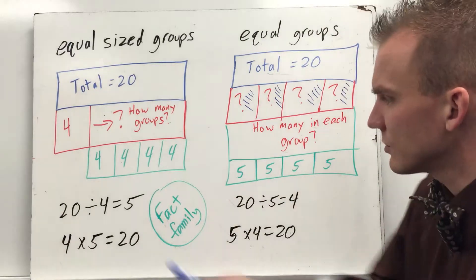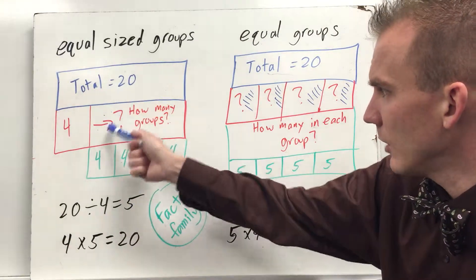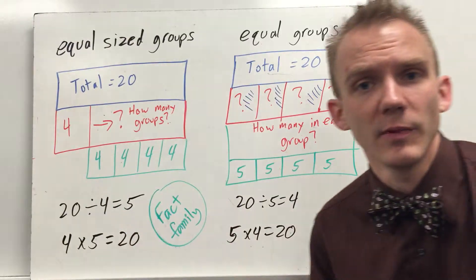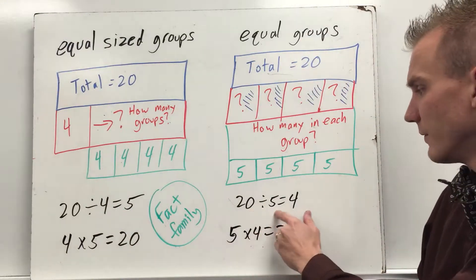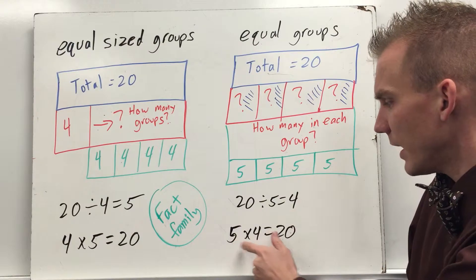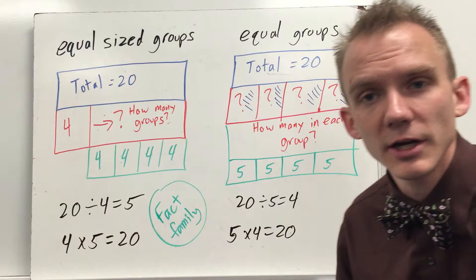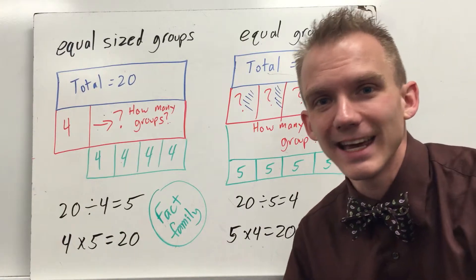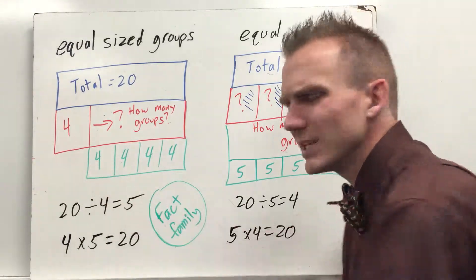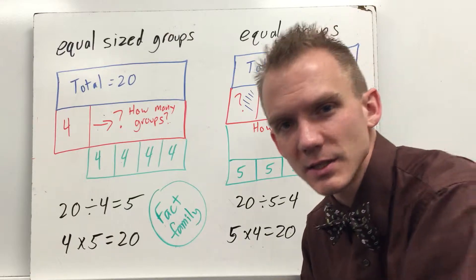Your fact family for this would be 20 divided by 4 equals 5. That's really how I would solve both of these. But you could also do 20 divided by 5 equals 4. 5 times 4 and 4 times 5 are the multiplication facts, both of which equal 20 and make up our entire fact family. And don't forget division also relates closely to subtraction and repeated subtraction.